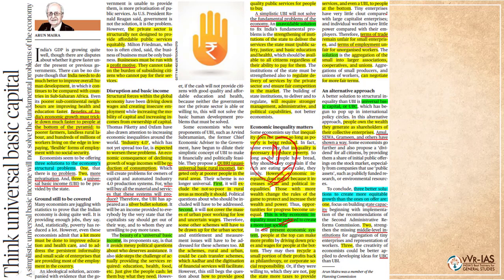Now the author proposes, rather than universal basic income, a universal basic capital — where people shall hold the wealth they generate as shareholders of their collective enterprise, such as Amul, Seva, or Grameen, which have shown the way. Basically, he is suggesting the cooperative way rather than the corporate private sector way to increase the development front of India.